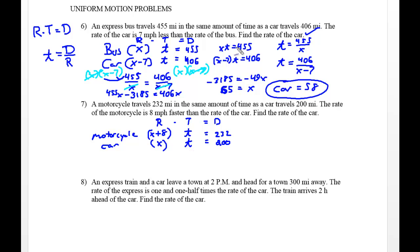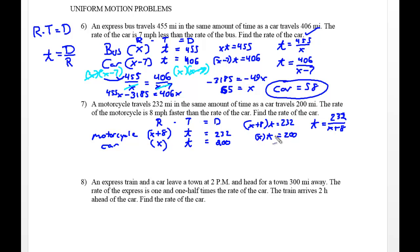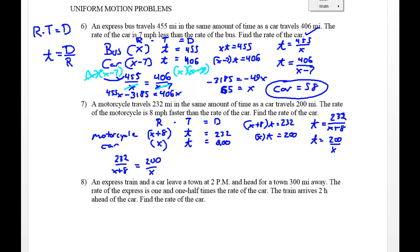Setting up the equations just like before: x plus 8 times t equals 232, and x times t equals 200. Getting the t's by themselves, I divide the first equation by x plus 8, so t equals 232 divided by x plus 8, and dividing by x gives t equals 200 divided by x. Since both equal t, I can set the fractions equal: 232 over x plus 8 equals 200 over x.